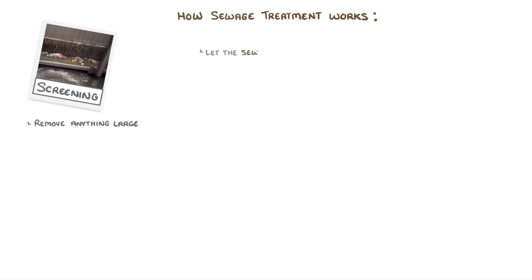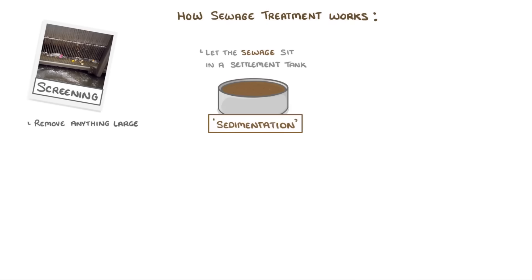The second step is to let the sewage sit in a sediment tank for a while so that it can undergo sedimentation. This is where the heavier solid bits in the mixture sink to the bottom to form sludge, and we're left with a lighter part called the effluent at the top, which we can then separate into two separate tanks.